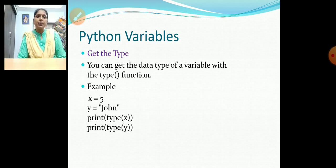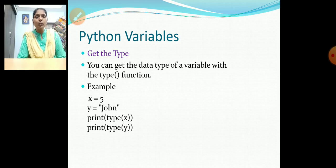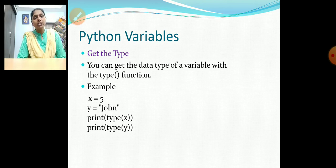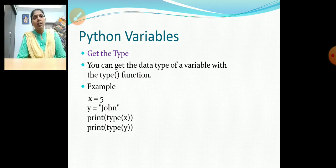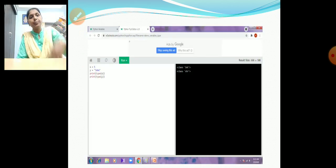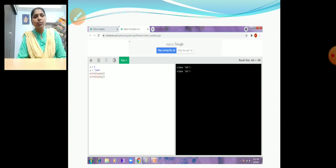To get the data type, we use the function type(). For example, x = 5, y = 'John'. Using print(type(x)) and print(type(y)), the output shows class int for x and class str for y.